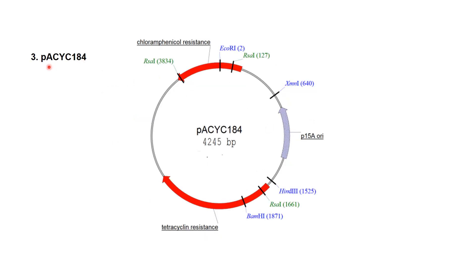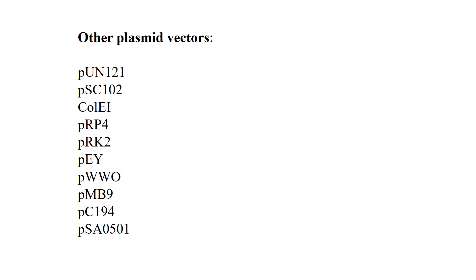Another type of plasmid vector is pACYC184. Its size is 4245 base pairs. It carries a tetracycline resistance gene and a chloramphenicol resistance gene as selectable markers. Different types of restriction sites are present, and its origin of replication is from the P15A plasmid. This is the pACYC184 plasmid vector.